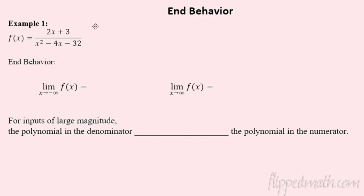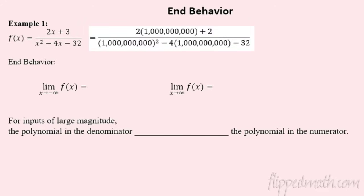Let's start with an example — don't write this down yet. I've got my rational function right here and let's start with positive infinity. As I go to the right, what's happening? I could go to the table and put in 10, 100, 1000, 10,000. What I did is I went ahead and plugged in a billion. A billion is a pretty big number — over six billion people on Earth — but a trillion gets so big it's hard to comprehend. So let's work with a billion.